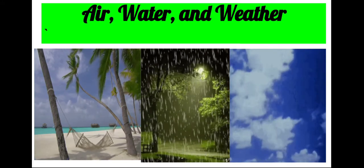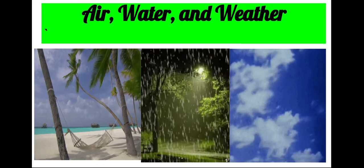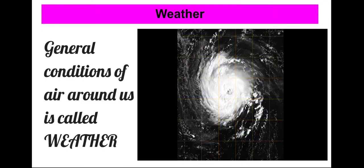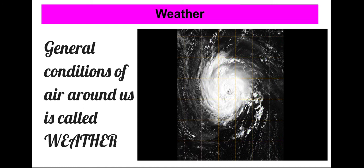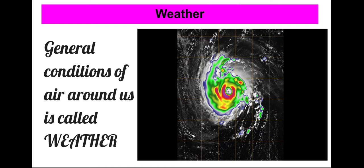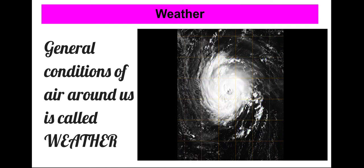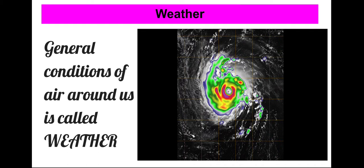What is weather? The general condition of air around us is called weather. Changes in the weather are caused by the sun's heat, wind, and water vapour in the air.